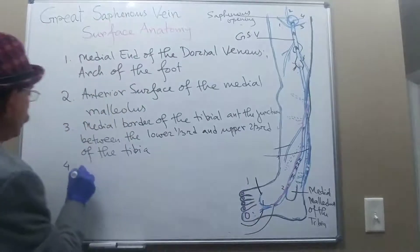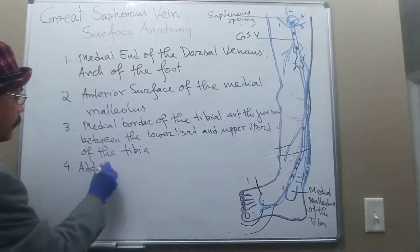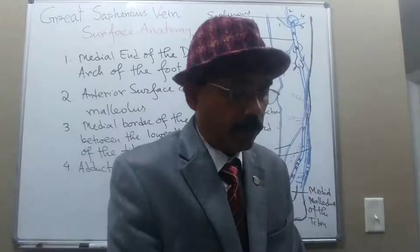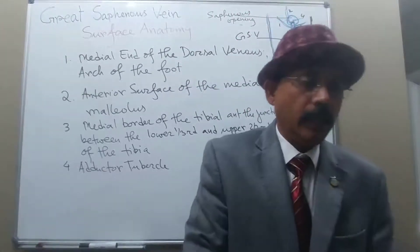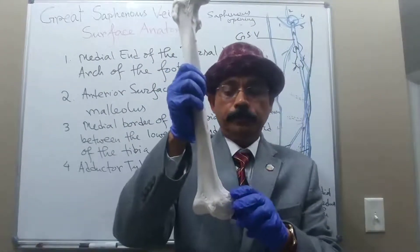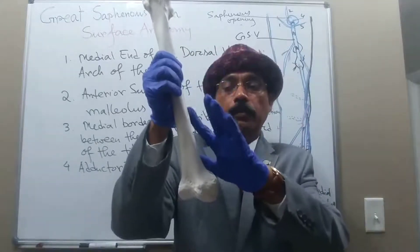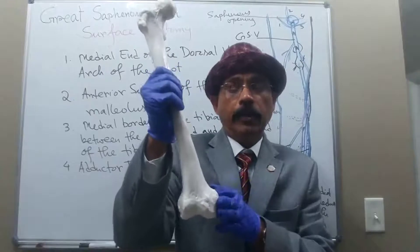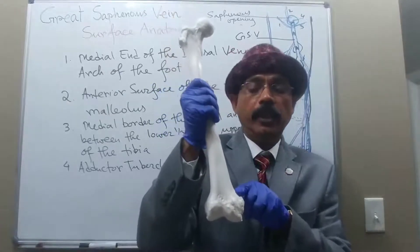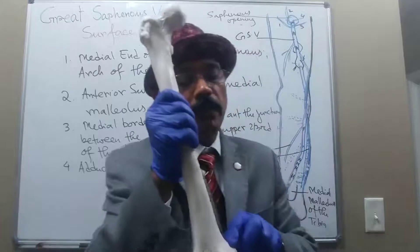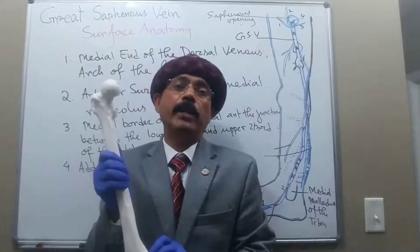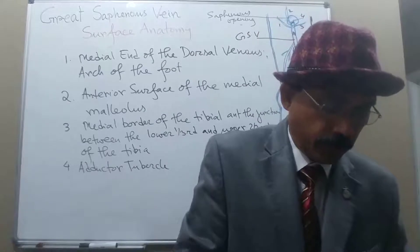The fourth point is the adductor tubercle. The adductor tubercle is present on the lower end of the femur, just above the medial condyle of the femur. You can palpate the adductor tubercle, where the lowest fibers of the adductor magnus are inserted.